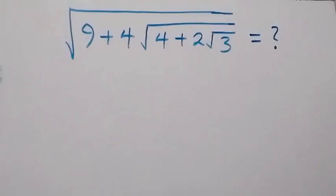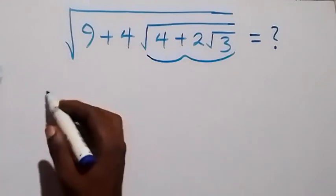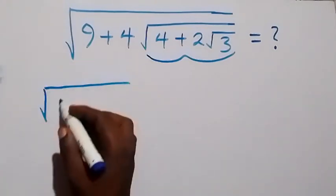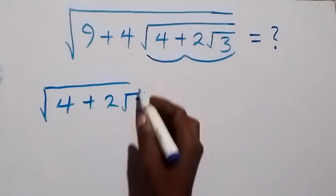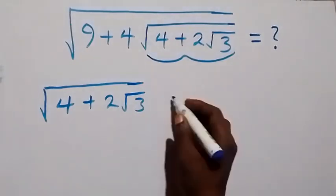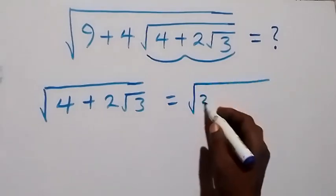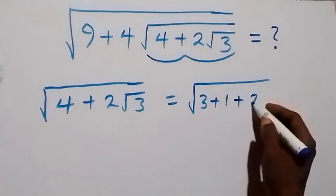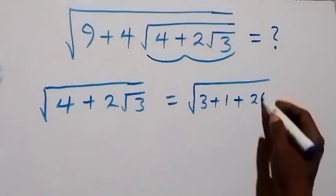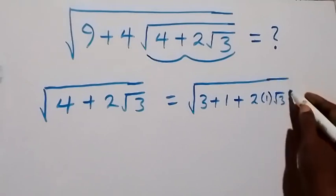Hello, you are welcome. How to solve this nice problem involving square roots. Let's work from here. We are given square root of 4 plus 2√3. We can rewrite this as square root of 3 plus 1 plus 2 times 1 times √3.